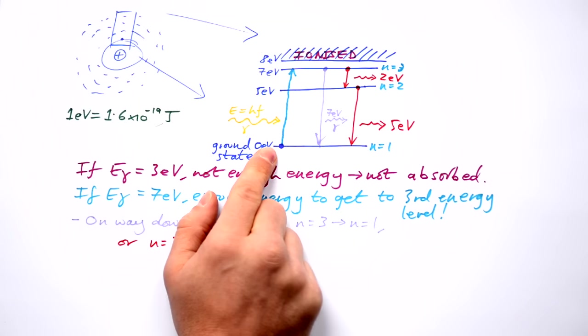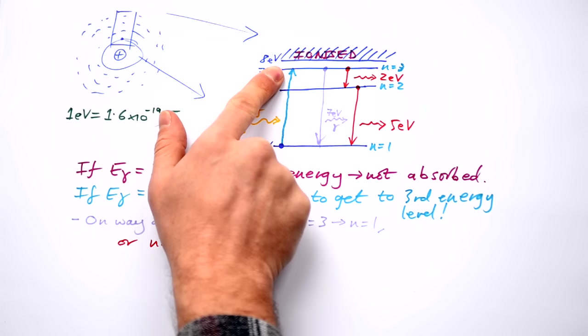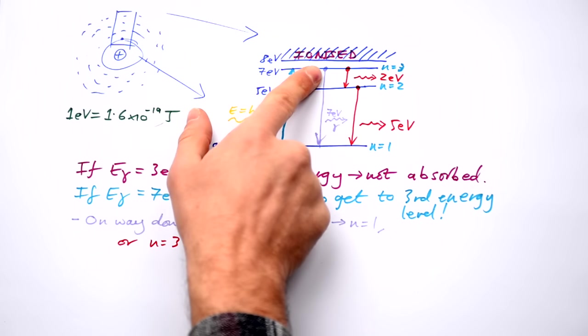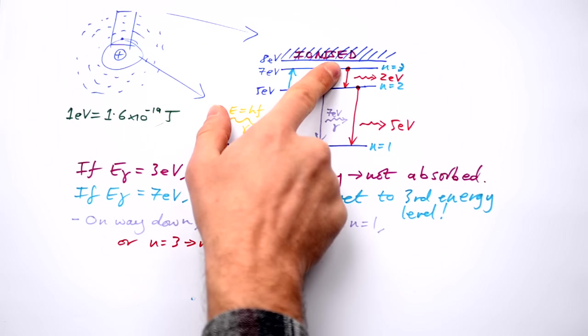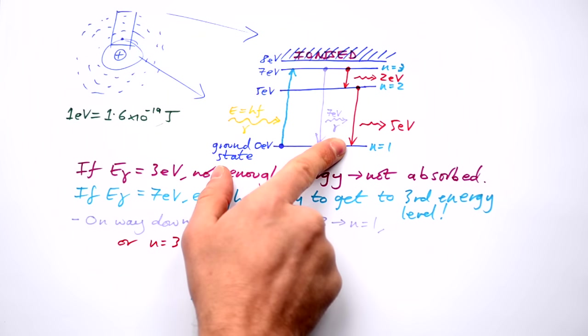So when an electron absorbs some energy from a photon, it only absorbs one photon. But on its way down, it has choices. It can go straight to the bottom, or it can go to energy levels in between, then fall to the bottom from there.